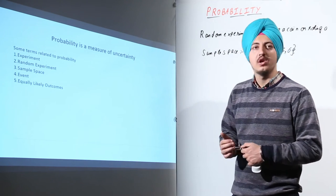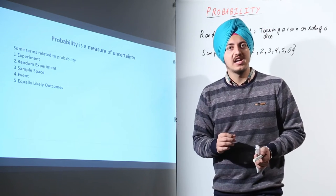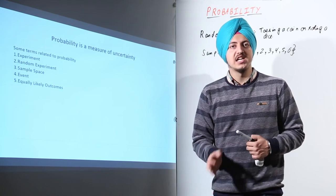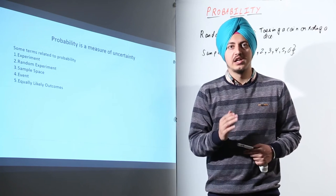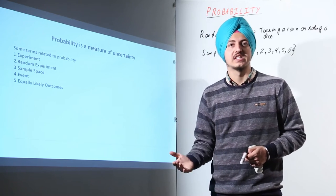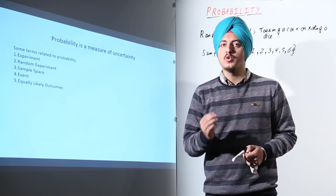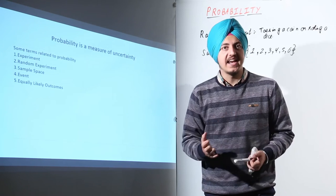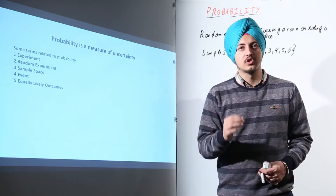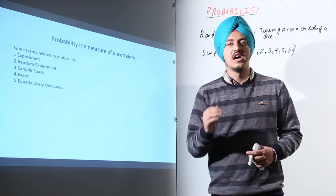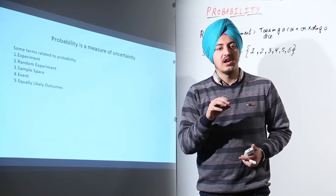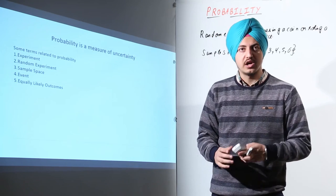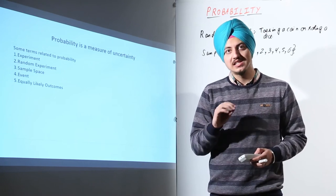The fifth term is equally likely outcomes. Equally likely outcomes are outcomes that are equally likely to occur. When I throw a dice, it is equally likely that the result will be 1, 2, 3, 4, 5, or 6 — no preference is given to any number. Similarly, when I toss a coin, no preference is given to heads or tails. Outcomes that have the same probability of occurring are equally likely outcomes. In our probability syllabus, all outcomes are going to be equally likely.